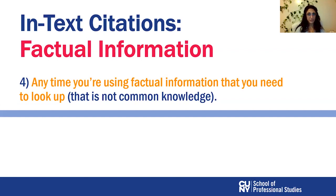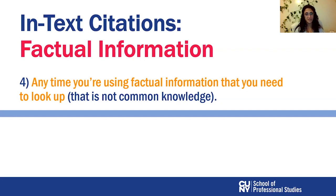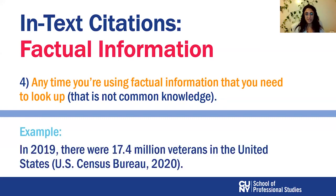Moving on to the fourth situation where you must cite your source — when you use information that is not common knowledge. For example, if you say there are 50 states in the US, that's common knowledge and you don't need to cite it. However, if you want to say that in 2019 there were 17.4 million veterans in the United States, that is not common knowledge. That is a statistic and you need to give the source. Here it was taken from the US Census Bureau — a credible source — and the year the statistic was published, 2020.